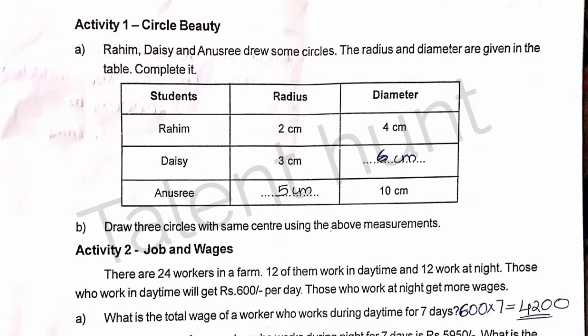Big question: draw 3 circles with the same center using the above measurements. What does this measurement mean? That is, a 2 cm radius circle and a 4 cm circle. There are 3 circles. We can draw circles within circles using a scale of 2 cm radius.